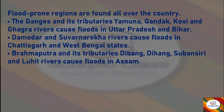Now let's discuss flood-prone areas. Flood-prone regions are found all over the country. The Ganges and its tributaries — Yamuna, Gandak, Kosi, and Ghagra rivers — cause floods in Uttar Pradesh and Bihar. Damodar and Suvarnarekha rivers cause floods in Chhattisgarh and West Bengal. Brahmaputra and its tributaries — Dibang, Dihang, Subansiri, and Lohit rivers — cause floods in Assam.